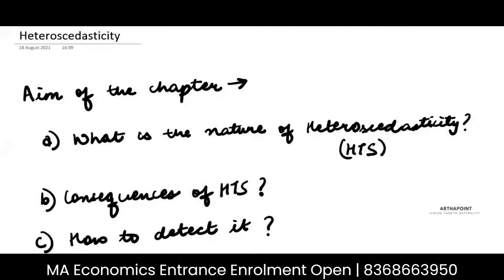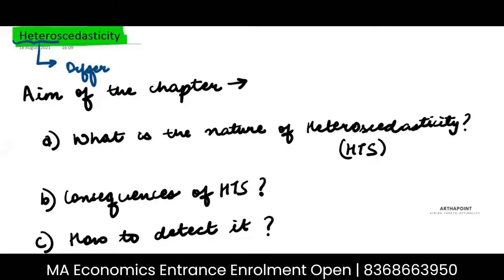In this lecture, we'll go ahead and talk about heteroscedasticity. Hetero means different and scedasticity means variance. So, heteroscedasticity really refers to a situation of different variance — when the variance keeps on changing.